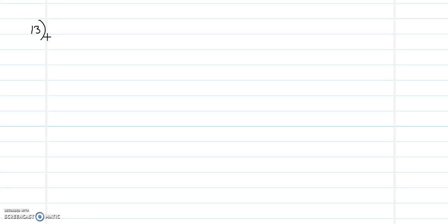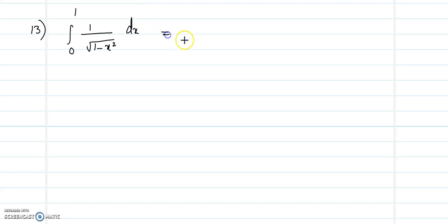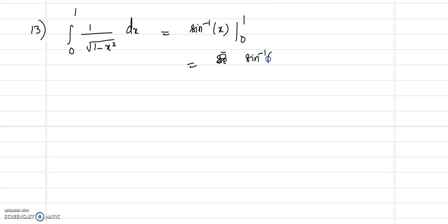Question number 13: we need to evaluate the integral from 0 to 1 of 1/√(1-x²) dx. The antiderivative of 1/√(1-x²) is sin⁻¹(x). Applying the limit from 0 to 1, we get sin⁻¹(1) minus sin⁻¹(0). Sin⁻¹(1) = π/2 and sin⁻¹(0) = 0.